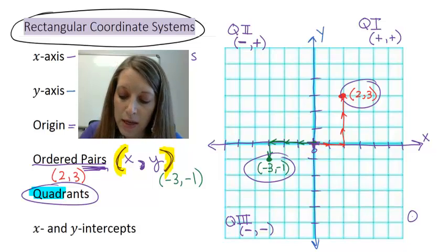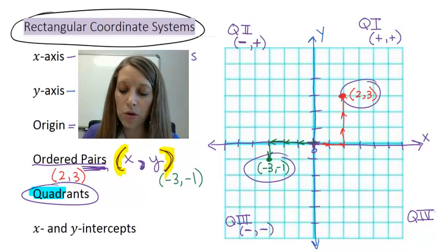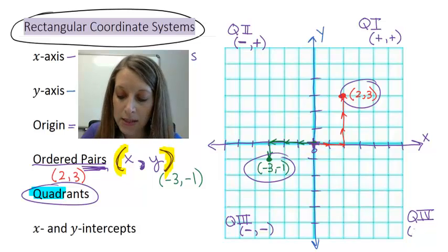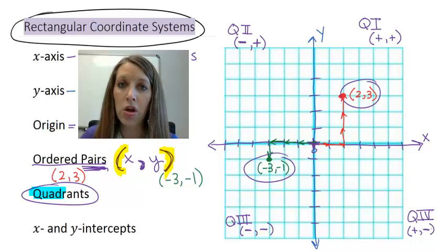Last but not least, quadrant four or IV in Roman numerals will count a positive x direction and a negative y direction. Right then down. So not only will you be plotting points, but you might also have to pick out what quadrant they're in. And it should be really easy. Just look at the signs of the number or know that the labels of those quadrants go in the counterclockwise direction.